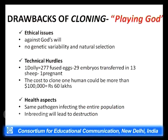There are also technical hurdles. It is a very expensive technique. To get one Dolly, 277 fused eggs were utilized and 29 embryos were transferred into thirteen sheep to get one pregnant sheep — so you can understand the cost of making just one Dolly.